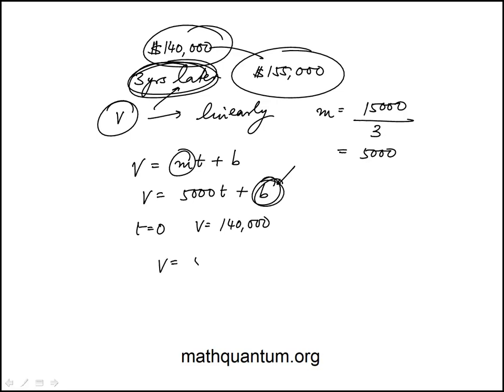So the function is $5,000 t plus $140,000 and if I look at the answer choices this is same as choice B.